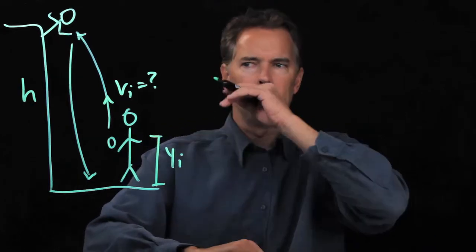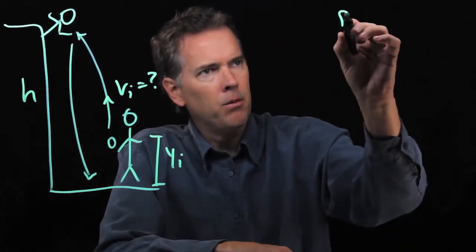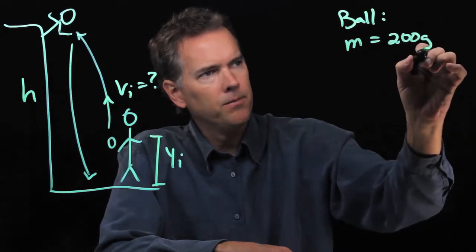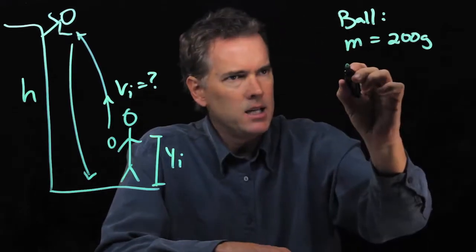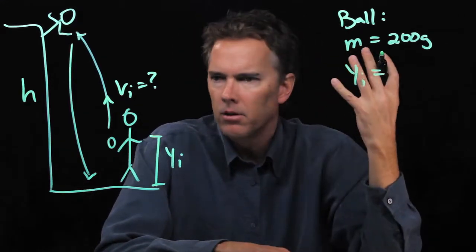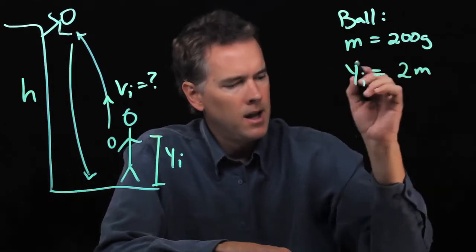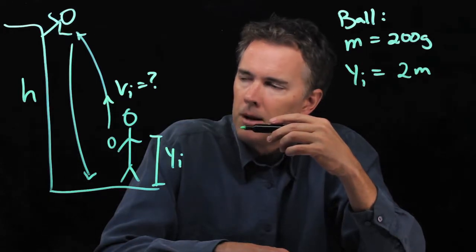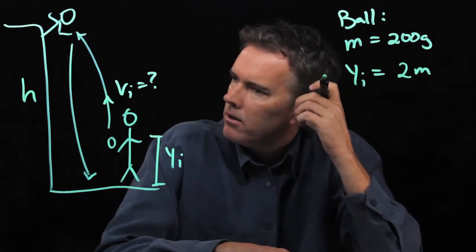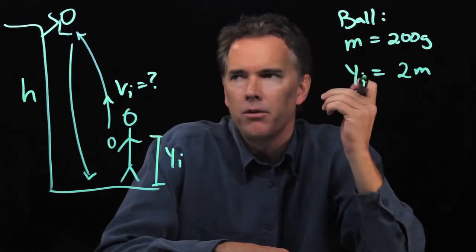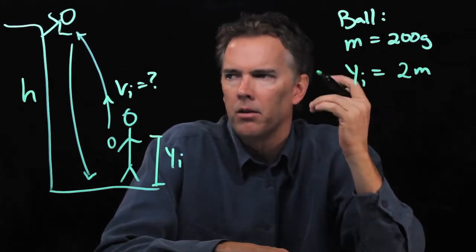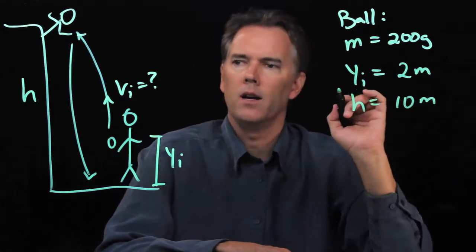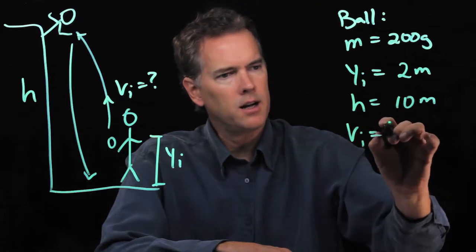Let's write down some givens. Our initial height is basically the height of a person — about six feet, which is about two meters. The building is roughly ten feet per story, and let's say it's a three-story building, so that's thirty feet, which is roughly ten meters. So VI equals what?